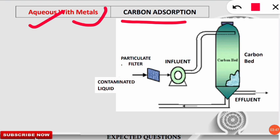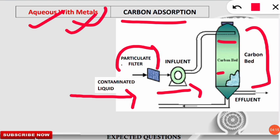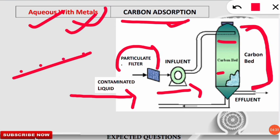This is very similar to the water filters used in our homes. Activated carbon — a term you would have heard — is used to filter most hazardous waste along with metals found in water. Assume there is a contaminated aqueous solution with metals. First, it passes through a particulate filter so that larger particles are filtered out. Then it is treated as the influent and goes inside the carbon adsorption chamber, which is a complete bed made up of carbon, normally taken from organic material — organic carbon. The carbon then performs adsorption.